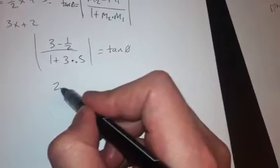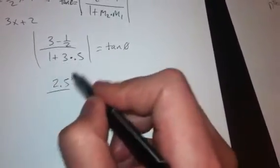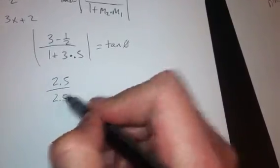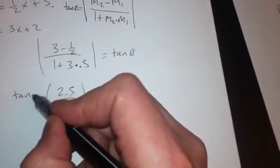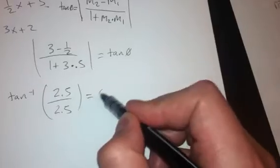So this is 2.5 over 2.5. Take the inverse tan of this. Tan inverse gives us theta.